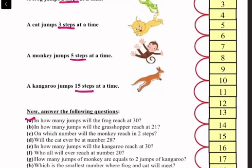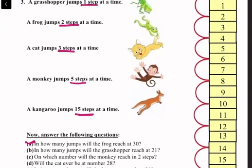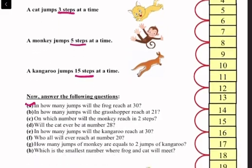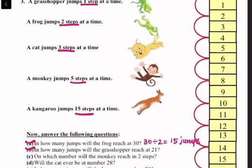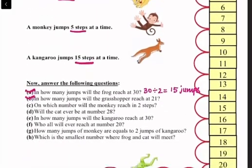The frog jumps two steps at a time, so it will reach number 30 after 15 jumps. (b) In how many jumps will the grasshopper reach 21? The grasshopper jumps one step at a time, so it will reach 21 after 21 jumps.